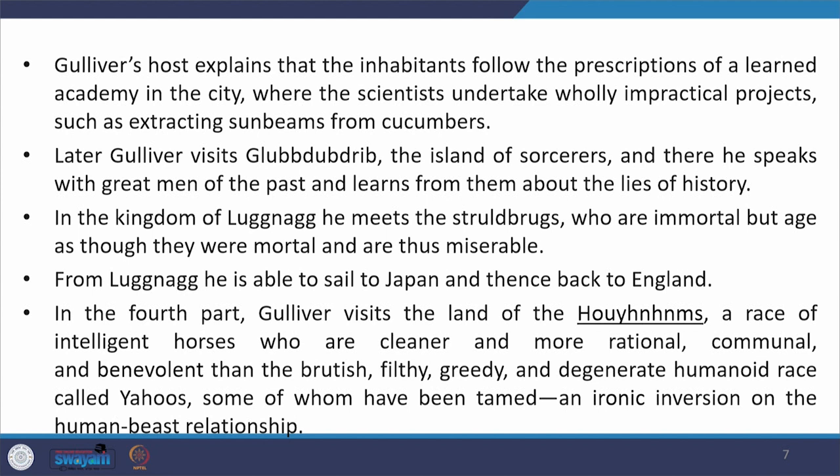Gulliver visits the island of the sorcerers where he speaks with great men of the past and learns about the lies of history. In the kingdom of Lugnag, he visits the Struldbrugs, who are immortal but age as though they were mortal and are thus miserable. From Lugnag, he is able to sail to Japan and then from there comes back to England.